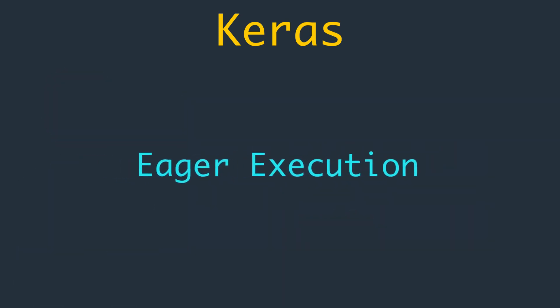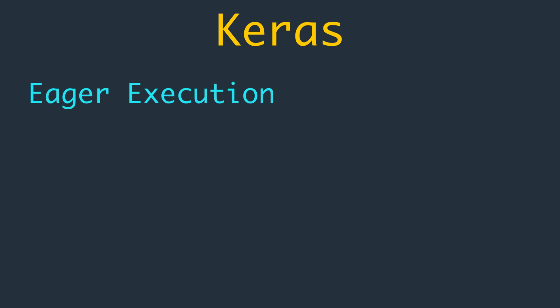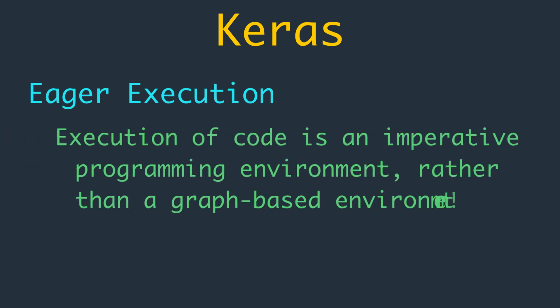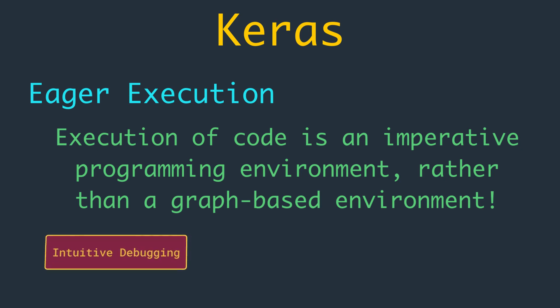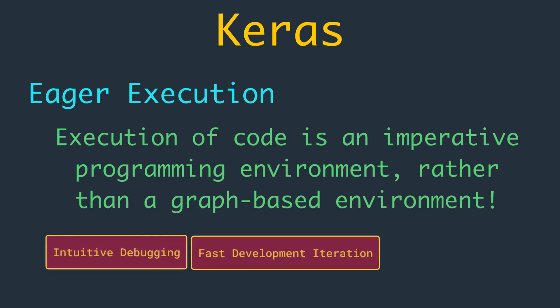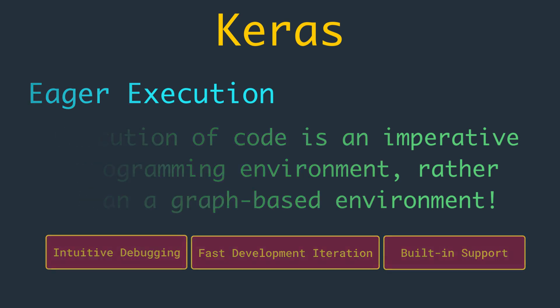But what is eager execution? Eager execution means that code executes in an imperative programming environment rather than a graph-based environment, which was the only way to work in the initial versions up to 1.5 of TensorFlow. This imperative style allows for intuitive debugging, fast development iteration, and built-in support for distributed training on CPUs, GPUs, and even on Google's TPUs, which stands for Tensor Processing Units.